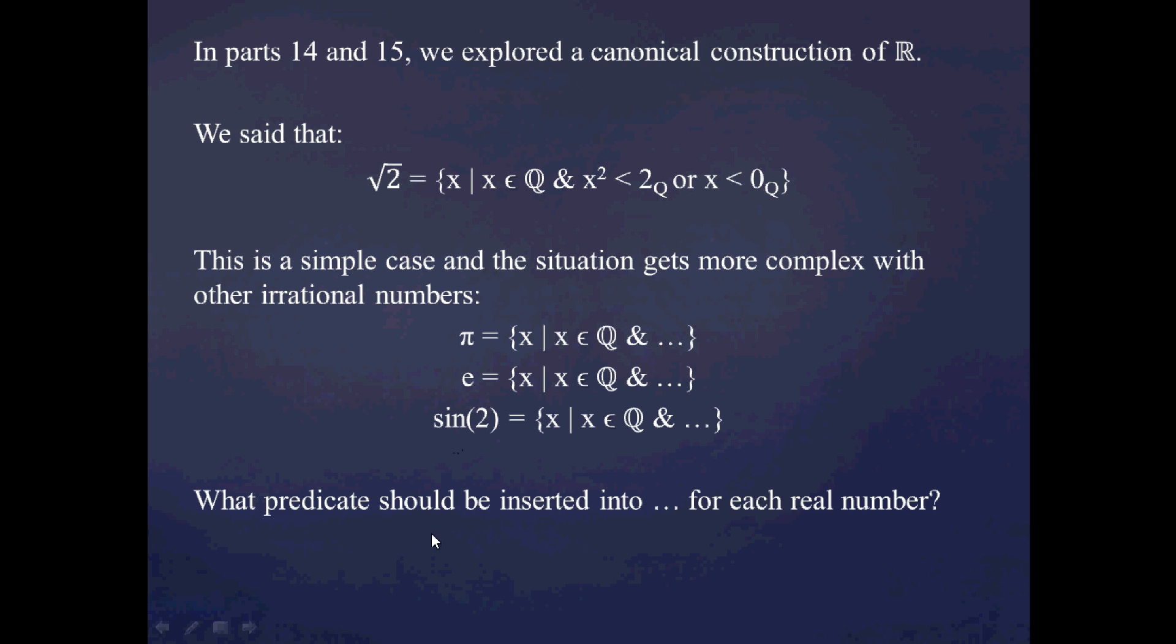So, the big question for this video is, what predicate or formula should be inserted into the dot dot dot in each of these examples? What predicate do we plug in there? So, in the case of the square root of 2, we plugged in x squared is less than 2, or x is less than 0. But what predicate do we plug into these other cases?